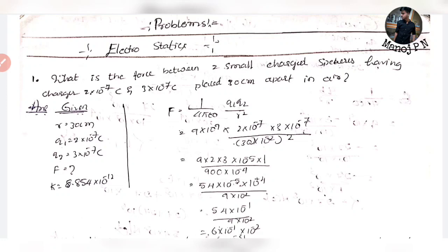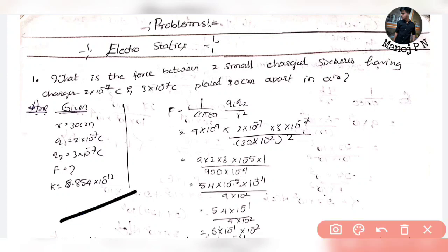The first problem: What is the force between two spherical charged spheres having charge 2×10⁻⁷ C and 3×10⁻⁷ C, placed 30 cm apart in air? The medium is air, so the permittivity constant ε₀ is 8.854×10⁻¹² . This is a direct formula implementation.